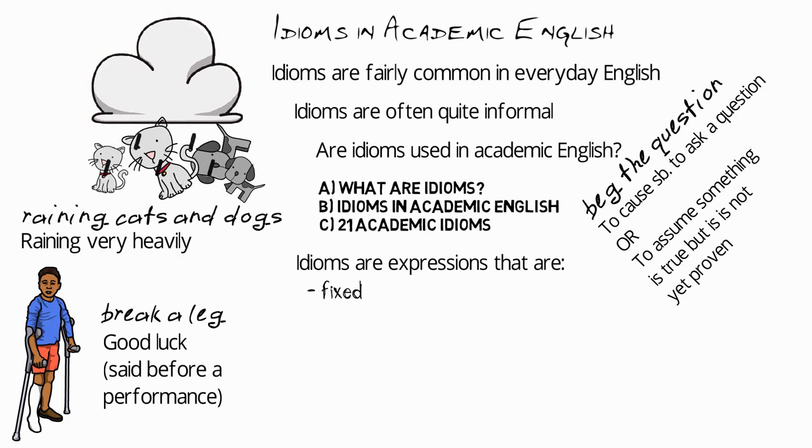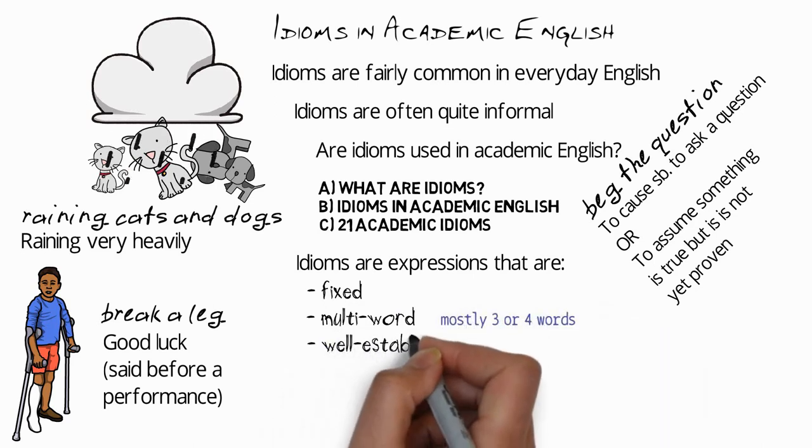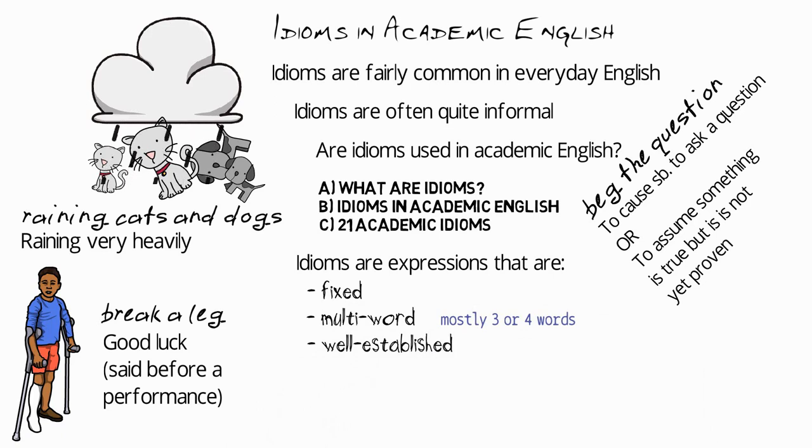Idioms are multi-word expressions, in other words at least two words. In fact, most idioms are three or four words in length. Idioms are well established. For example, beg the question has been around since the 16th century. Raining cats and dogs since the 17th century. Break a leg is actually a fairly recent idiom, originating sometime in the 1940s.